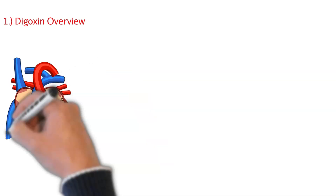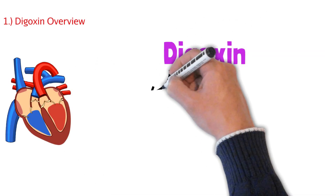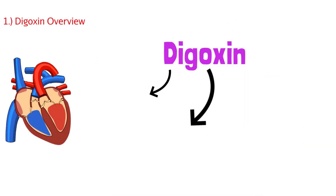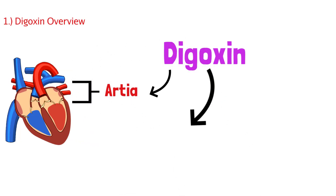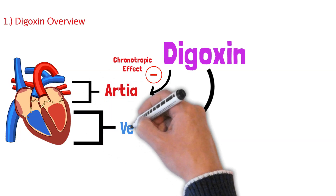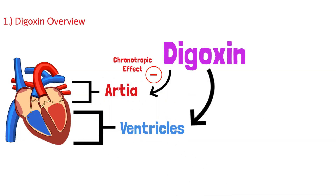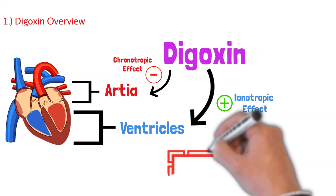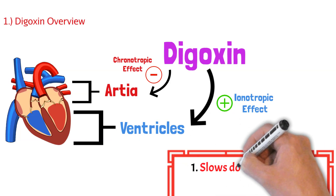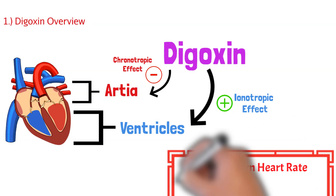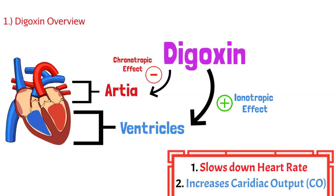Here's an overview of digoxin. Digoxin works on your heart in a couple of ways. It works on the atrial portion of the heart, helping with the chronotropic effect, and it also works on the ventricular side. Long story short, digoxin can do two things: it can slow down your heart rate or increase cardiac output. We'll talk about this in more detail later in the video.